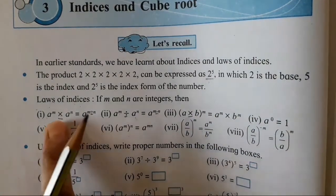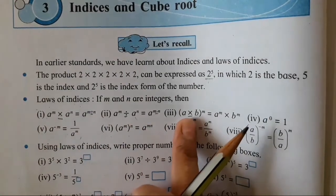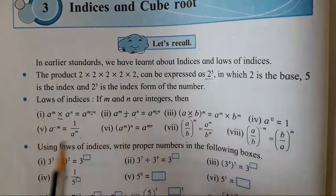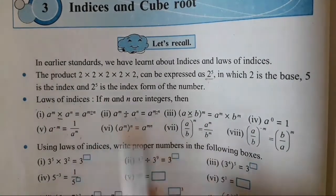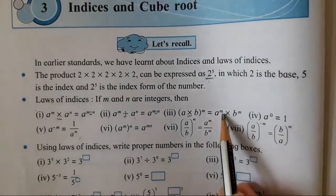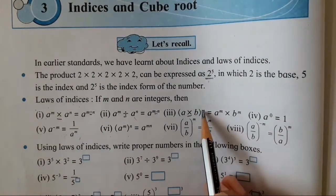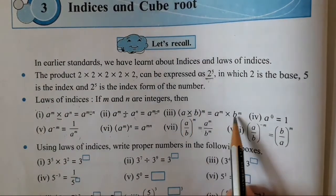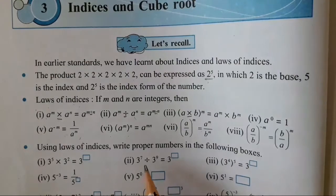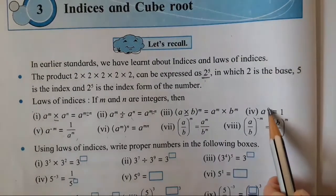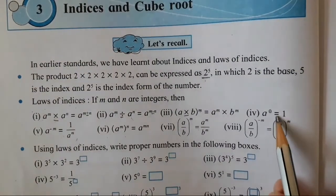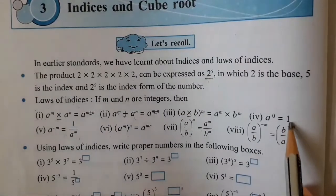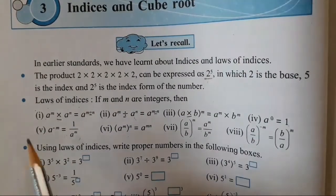This multiplication is different from the other — both are not the same. Over here we have to add, whereas over here we have to multiply M to A and B both. Then, when the index is 0, the value of A is 1. You all have to remember this.